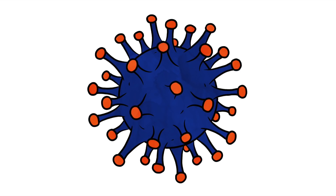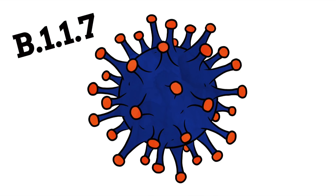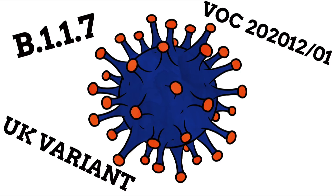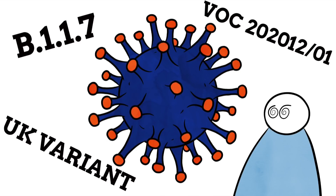A variety of titles have been applied to these variants, which has created quite a bit of nomenclature confusion and anger. The main source of confusion is that different groups of people are using different names for the same variants. For example, one variant first recorded in the United Kingdom is being called B.1.1.7 by the scientific community. However, when first noted by the UK, Public Health England dubbed it VOC 202012-01, with VOC meaning variant of concern. Many parts of the mass media, however, have decided to forego these jumbles of letters and numbers and instead just branded it the UK variant.